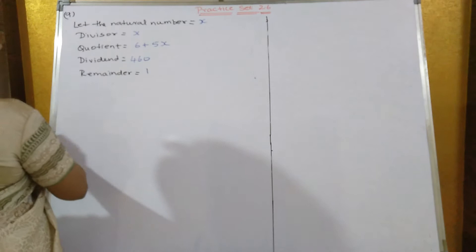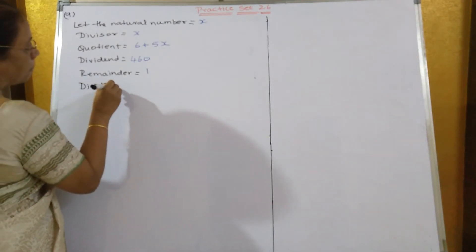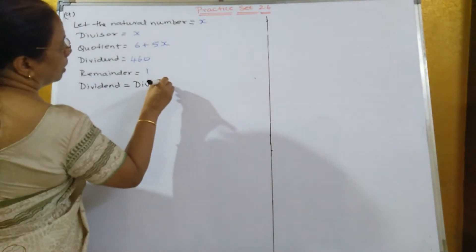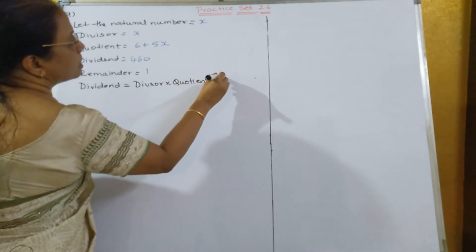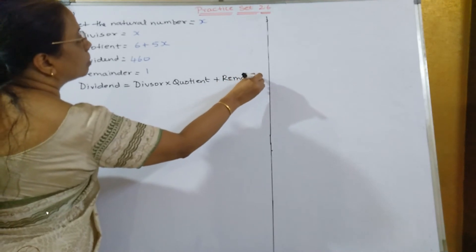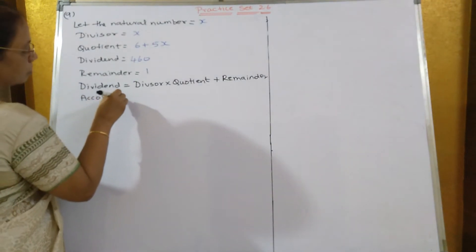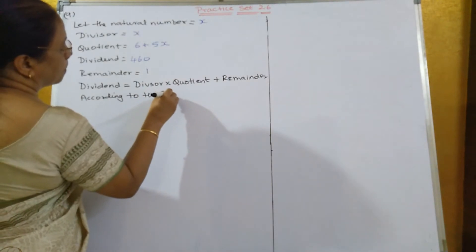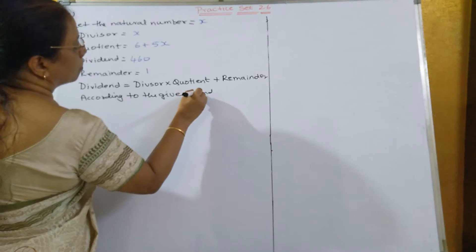Now, we know that we have studied in our earlier standard that dividend is equal to divisor into quotient plus remainder. We will be using this formula and finding out the value of x according to the given condition.